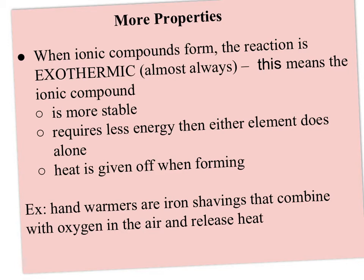Another property is that when ionic compounds form, the reaction is almost always exothermic — it releases heat. You can measure this heat, and we often do; we call it the heat of the reaction. When the ionic compound forms, it's more stable than the ions were before they formed. More stable means less energy, so it requires less energy to keep the compound together. For example, hand warmers are just iron shavings — really small pieces of iron — and when you open them up to the air, oxygen combines with them. It's basically iron combining with oxygen, or rusting, giving off that heat.